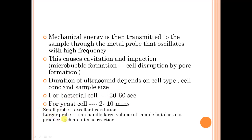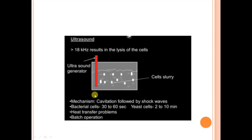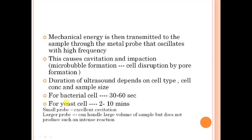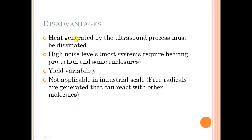There are small probes and large probes used in ultrasonication. Smaller probes produce excellent cavitation, which is effective at breaking open cells. Larger probes can handle larger volumes of sample but do not produce as intense cavitation. Comparing the two, smaller probes are the better choice, which is why the system is most often used in batch mode — small probes in batch mode produce excellent cavitation to break open cells and release contents.